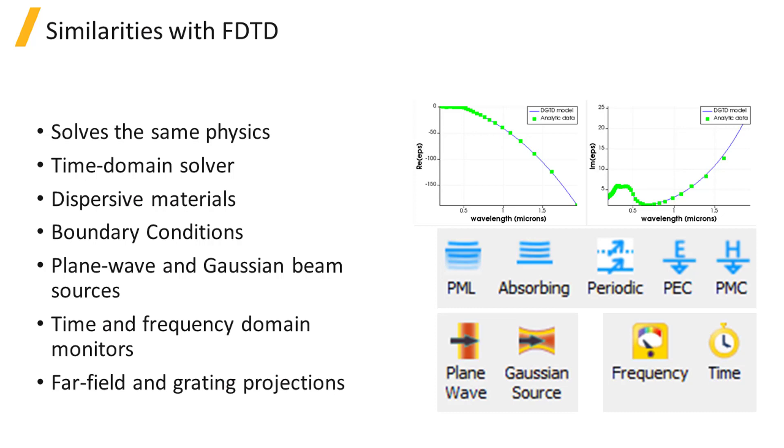FDTD and DGTD support plane wave and Gaussian beam sources. Data can be recorded using either frequency domain or time domain monitors. And finally, both solvers include far field and grating projection tools.